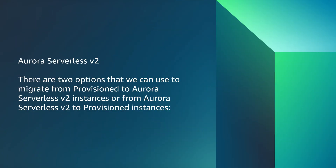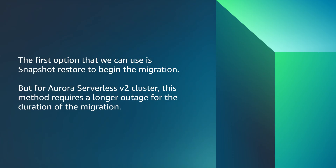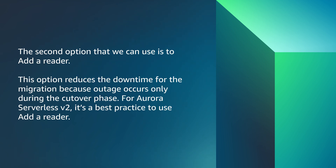Aurora Serverless v2: There are two options to migrate from provisioned to Aurora Serverless v2 instances, or from Aurora Serverless v2 to provisioned instances. The first option is snapshot restore, but this method requires a longer outage for the duration of migration. The second option is to add a reader, which reduces downtime because the outage occurs only during the cutover phase. For Aurora Serverless v2, it's a best practice to use the add a reader option.